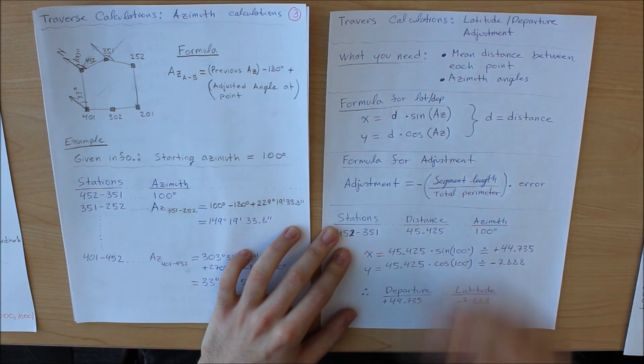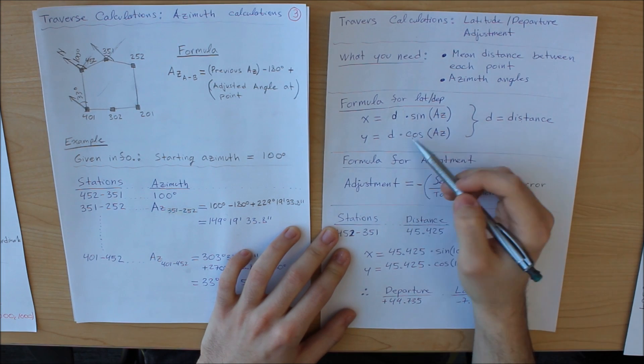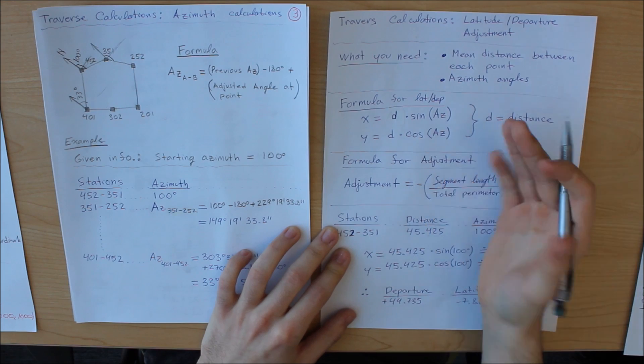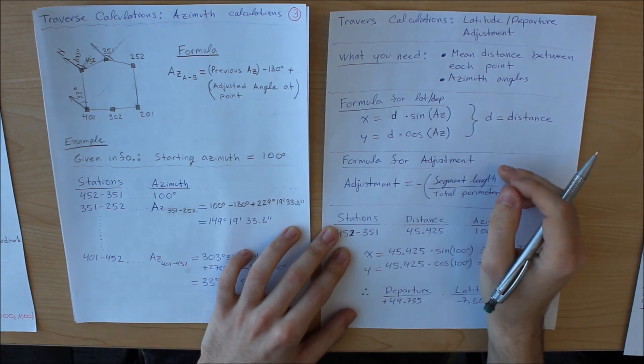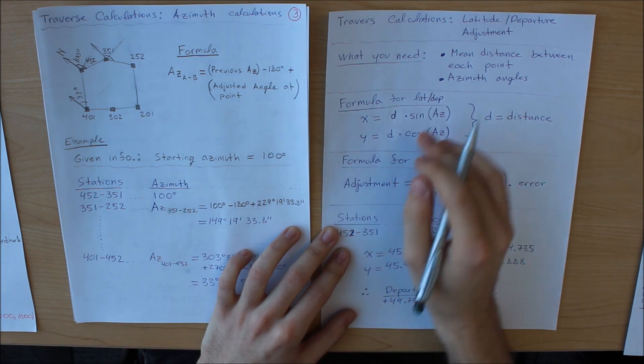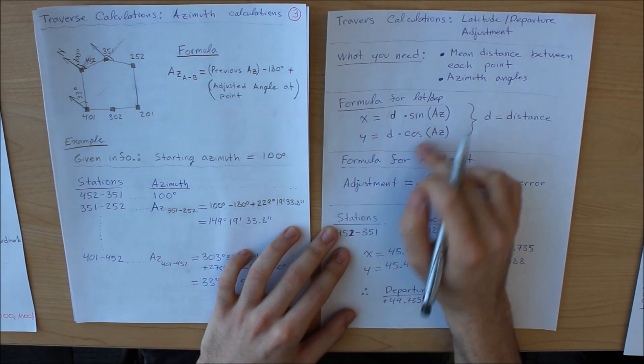Now typically in mathematics, to get your x component you use cos and to get your y you use sine. However, in this part it's the opposite. So keep that in mind because that can affect your values greatly if you confuse them. Just keep in mind that x uses sine and y uses cos.